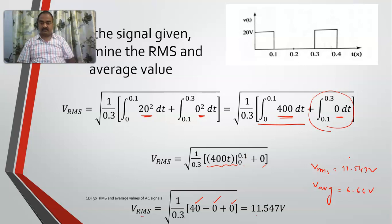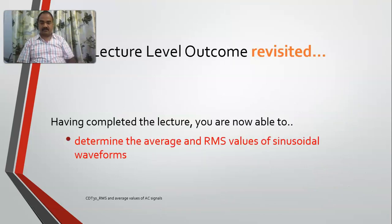So I hope that now you are able to determine the average and RMS values of the sinusoidal waveforms. We have also seen the sawtooth and pulse waveforms. In the next class, we will see some more waveforms, some more AC signals.